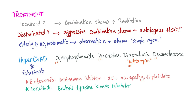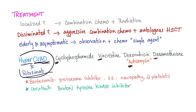For chemotherapy in mantle cell lymphoma, we prefer Hyper-CVAD or CVAD plus rituximab. CVAD stands for cyclophosphamide, vincristine, adriamycin, and dexamethasone. We can also use other drugs such as bortezomib, which is a proteasome inhibitor, and ibrutinib, which is a Bruton's tyrosine kinase inhibitor.